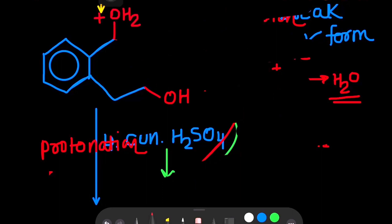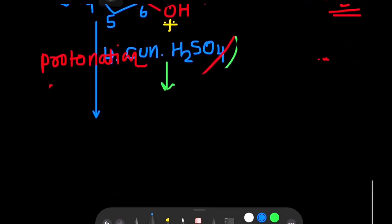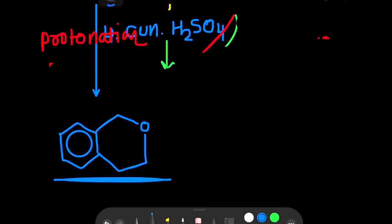This is the electrophilic center. Here oxygen has a lone pair. It will attack this carbon, water will be removed, and we get oxygen-carbon bond formation. A six-membered ring takes place, and this is our final product.